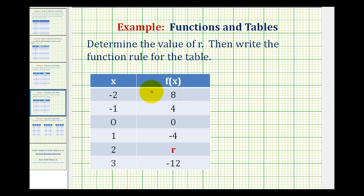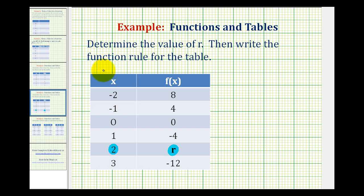Given this table that represents a function, we want to determine the value of r, which is the missing output when the input is positive two. Then we need to write a function rule for the entire table. Just to review, these x values represent the inputs into the function, also referred to as a domain, and the set of values in this column would be the outputs, called the range of the function.